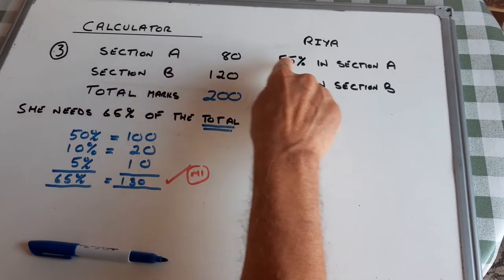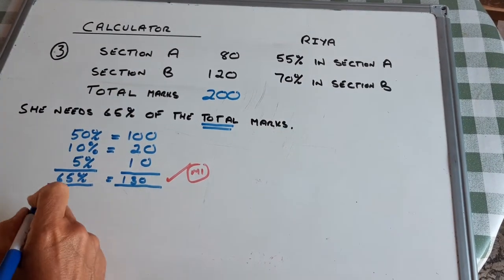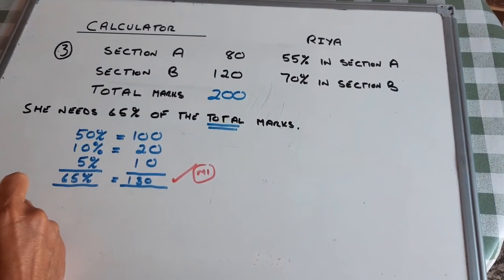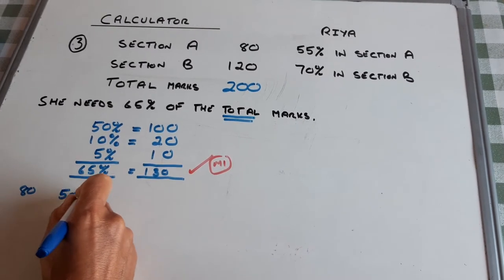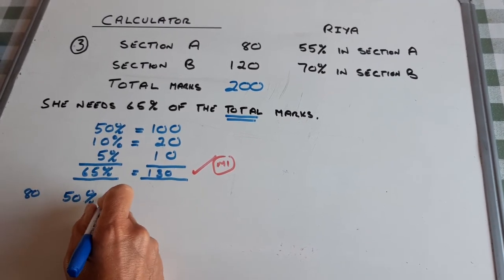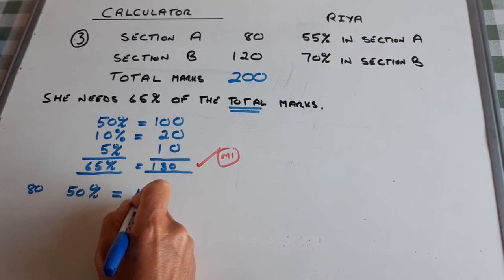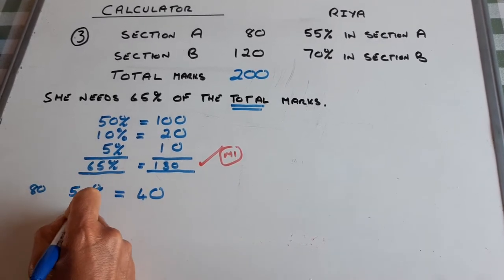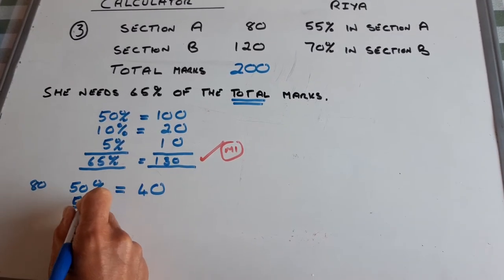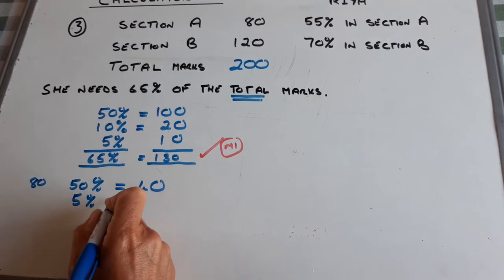55% of 80. 50% is a half, is 40 marks. 5% is 1 tenth of that,